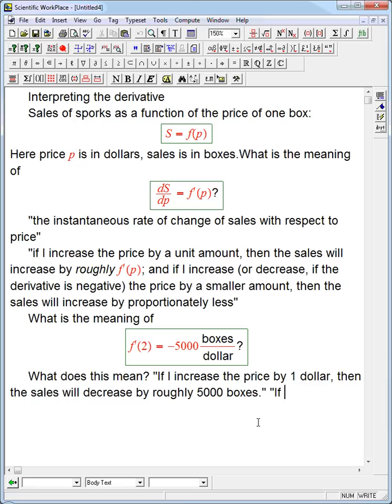What if I increase the price by 10 cents, 0.1 dollar? Then the sales will decrease by roughly, well, the beauty of derivatives is we're just assuming it's proportional. But with this approximation, we're going to assume that it decreases by 500 boxes.